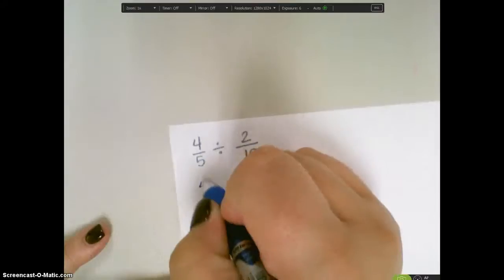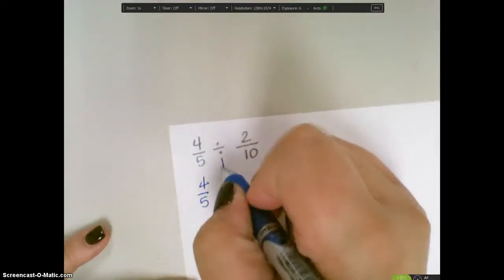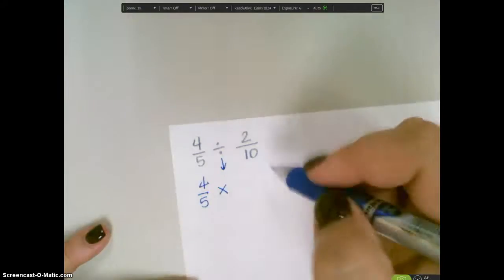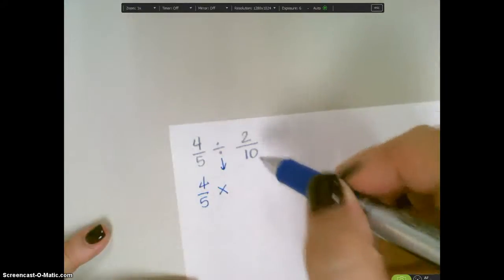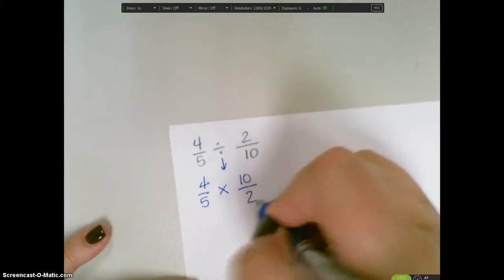So the way that I do that is going to be 4/5. I'm going to change this to a multiplication, and then I'm going to do the reciprocal of 2/10. The reciprocal is the opposite, which would be 10 over 2.